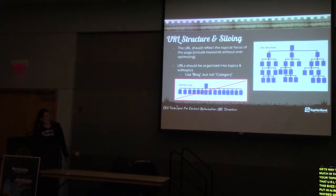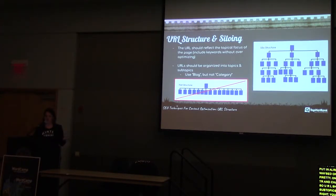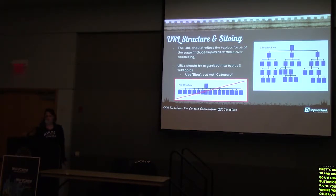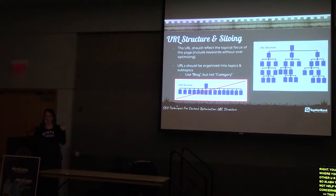URLs should be organized by topics and subtopics. You don't want a flat structure where your homepage links directly to every other URL at the same level. A flat structure doesn't help search engines and creates no relationship between pages. A proper siloing structure has your homepage, then categories like products, services, and blog, with each subcategory nested underneath. This makes it much easier for Google to understand which pages are related to which main category.